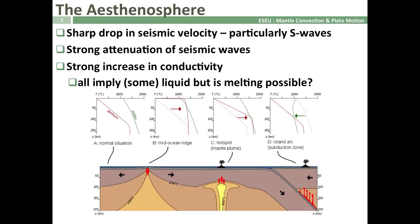The asthenosphere is marked by a sharp drop in seismic velocity — particularly for S-waves — a strong attenuation of earthquake waves, and a strong increase in electrical conductivity.